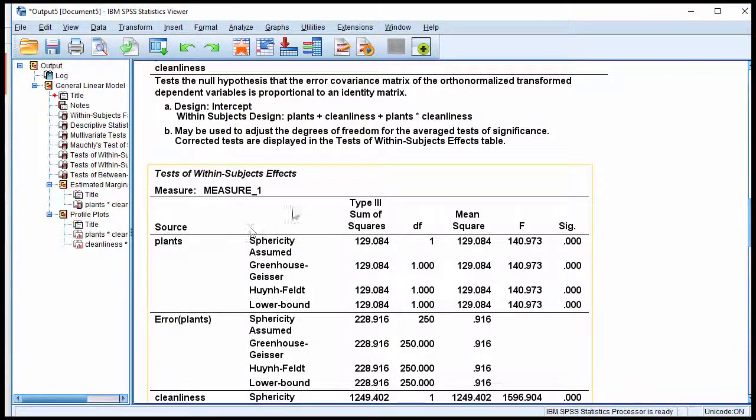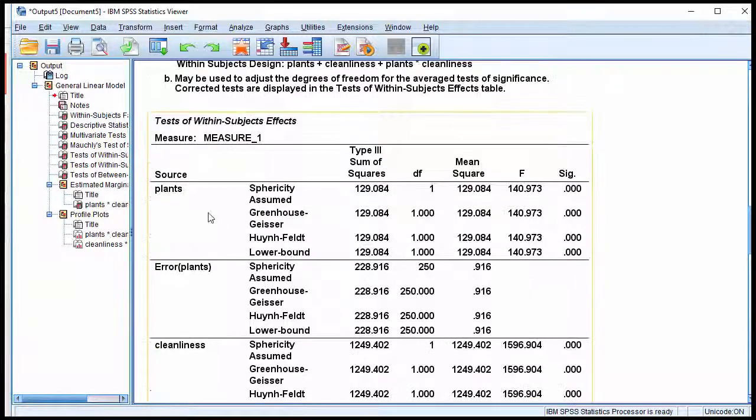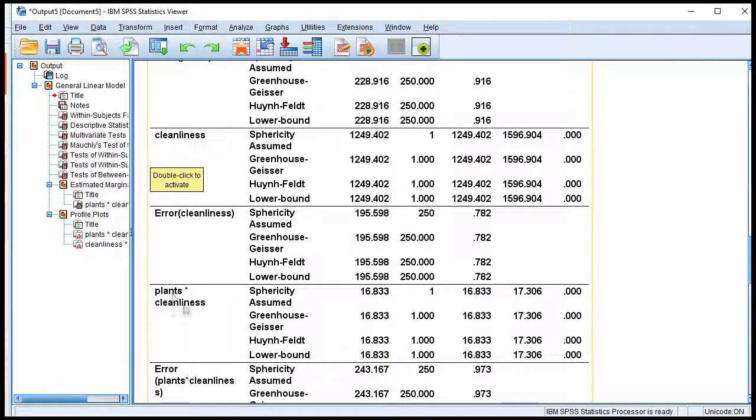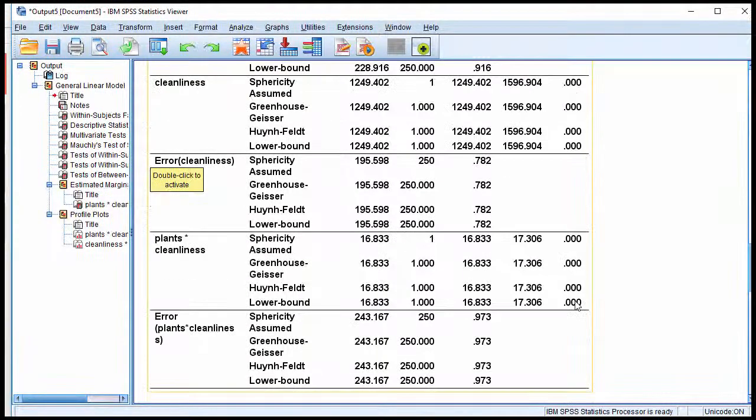So in this table here, tests of within subjects effects where you have the main effect plants, main effect cleanliness, and then plants by cleanliness interaction, which was significant. This is the mean square error term that I used to input into the formula.